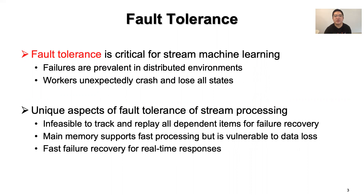Providing fault tolerance for stream machine learning, or stream processing in general, must deal with the following unique aspects. First, the system needs to process numerous items that arrive in continuous data streams, and it is infeasible to track and reprocess all dependent items for failure recovery. Second, operators often keep states in main memory for faster processing, but main memory is volatile and subject to data loss upon failures. Finally, faster failure recovery is critical for real-time response.